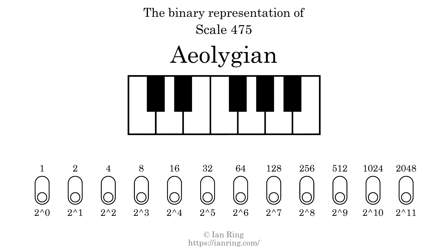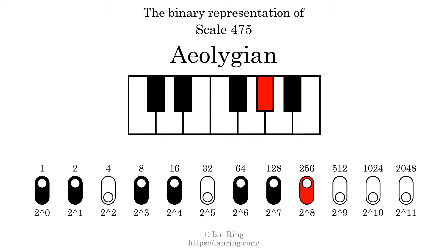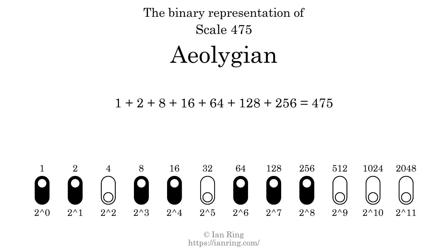The binary representation of this scale is determined by mapping tones of the scale to binary digits. Each binary digit represents a power of 2. To get the scale number, we add the powers of 2 together. The powers of 2 that are present in the scale, all added together, equals 475.